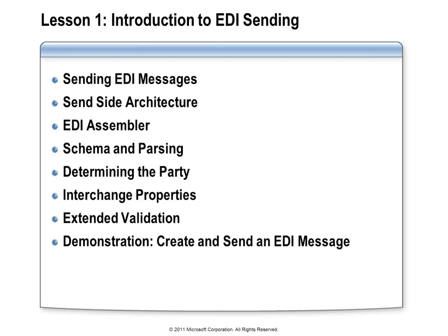As we look in the first lesson at the EDI sending capabilities, we'll understand how we send out those messages and the architecture involved. We'll talk about the EDI assembler and its role in using schemas, parsing and serializing information, how the party is determined for transport and protocol settings, the various interchange properties and extended validation we can apply, and finally a demonstration showing how to create and send an EDI message.